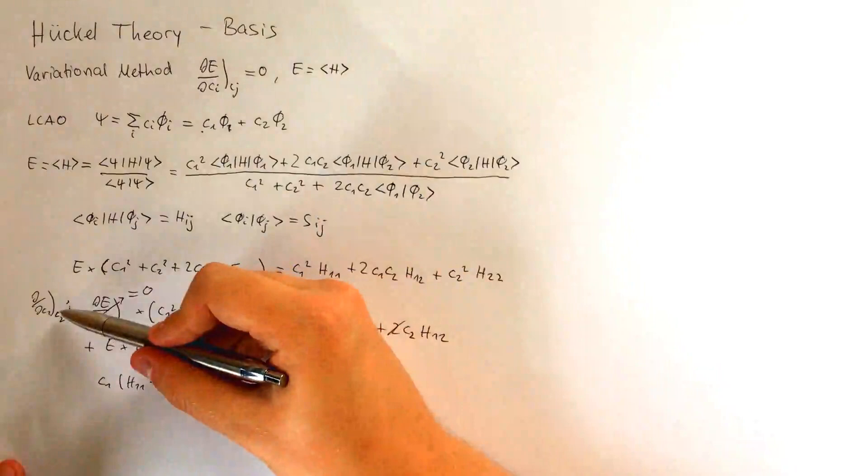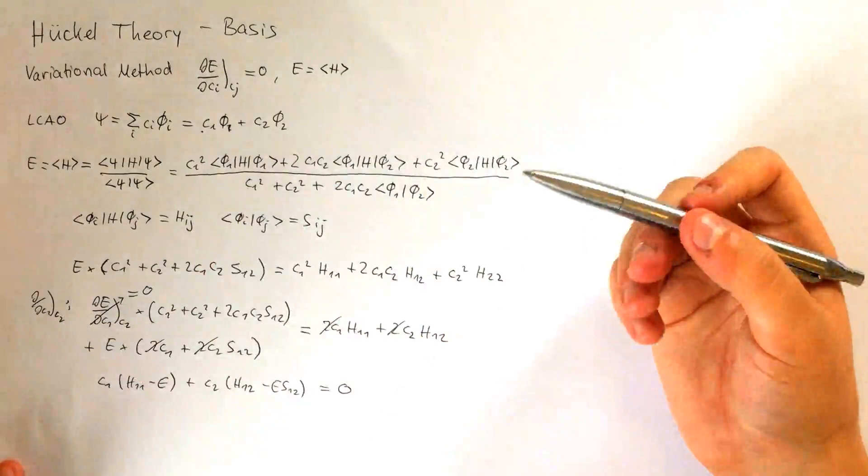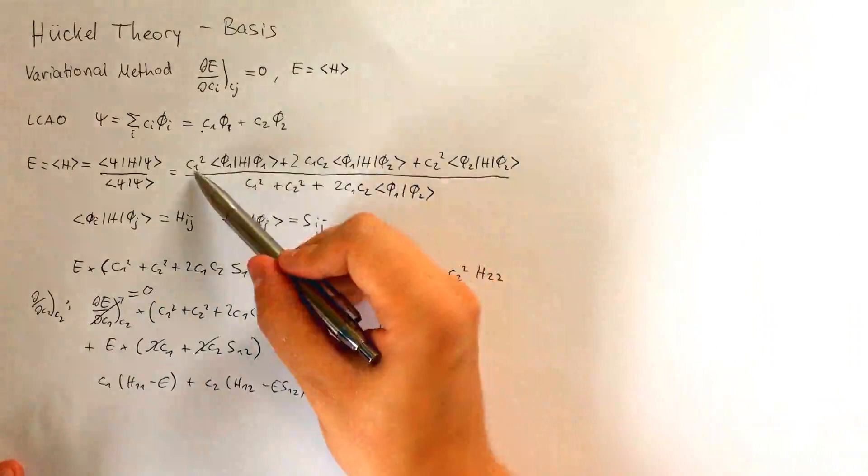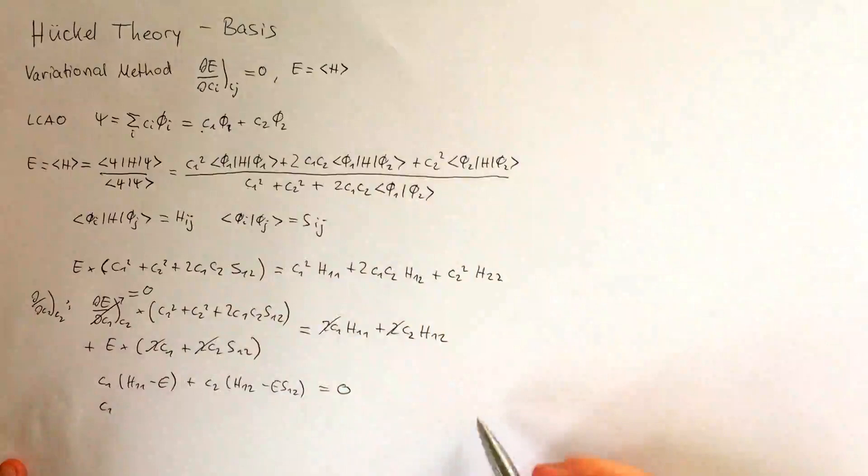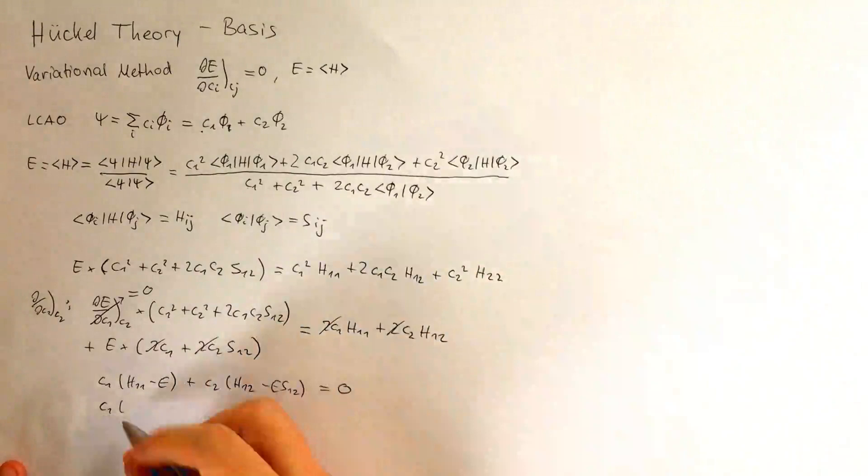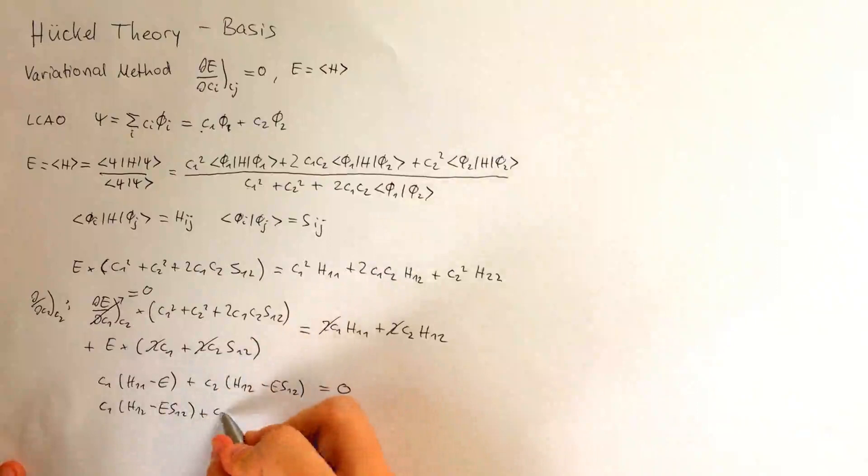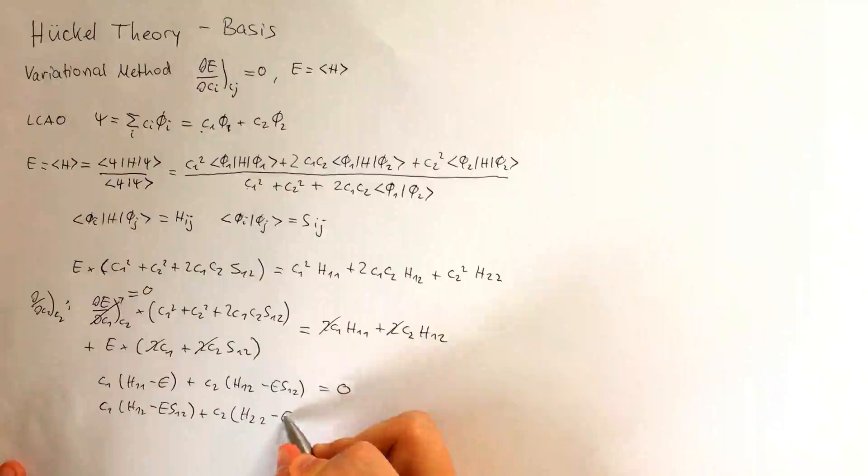Now, I've done this derivative with respect to C1, but I also need to do it with respect to C2. This is simple, however, since if we look back up here, everything is symmetric with respect to C1 and C2. So when you write down the expression for C2, we just note that now C1 has the mixed one-two terms, so H12 minus E S12, while C2 gets the pure terms with H22 minus E, which is also equal to zero.